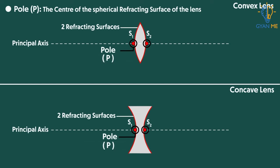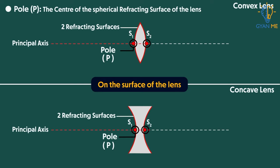Remember, it lies on the surface of the lens and not inside the lens. Well, it is imaginary. It is also a point where this principal axis meets the surface of the lens.